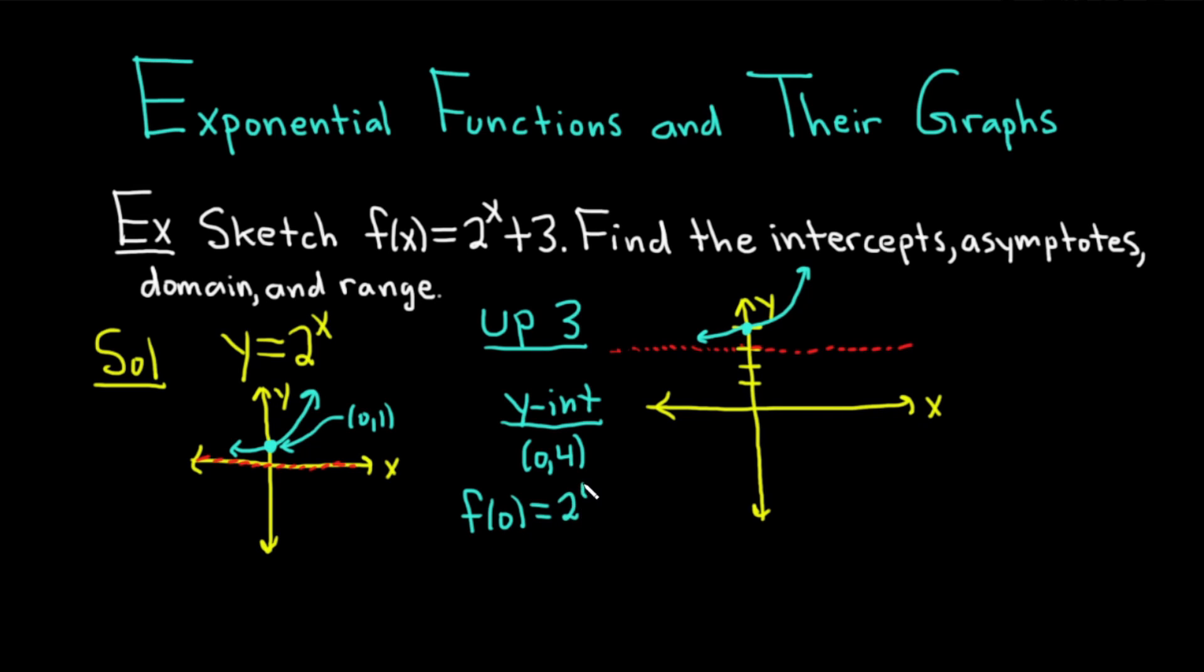So you would get 2 to the 0 plus 3. Then f of 0. Well, 2 to the 0 is 1. So you get 1 plus 3. So f of 0 is equal to 4. So your ordered pair is 0 comma 4. So not really necessary, but sometimes your graph is off or maybe the problem is harder. It's good to know how to find the y-intercept in other ways. You can always plug in 0 to find your y-intercept.